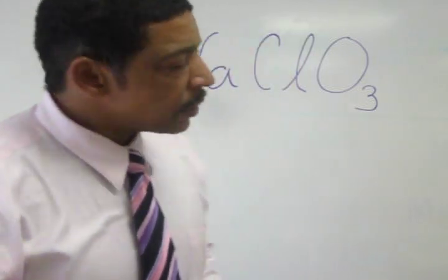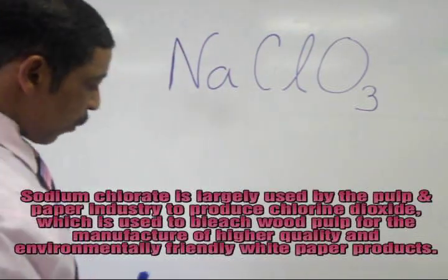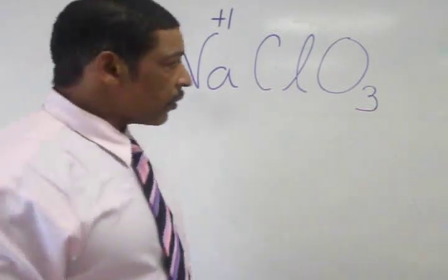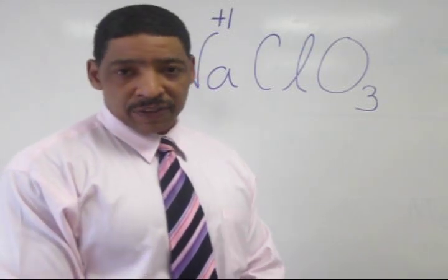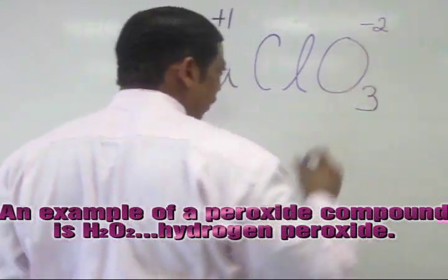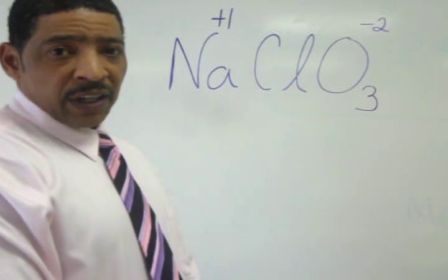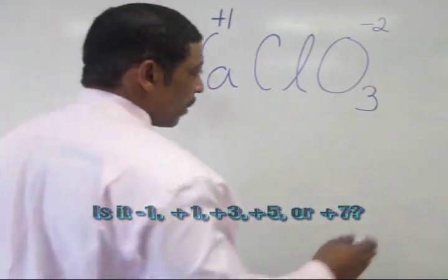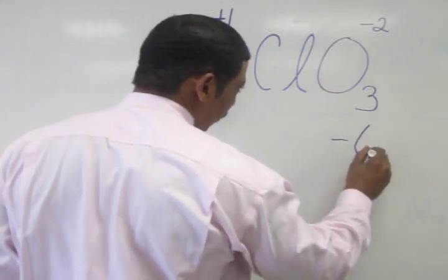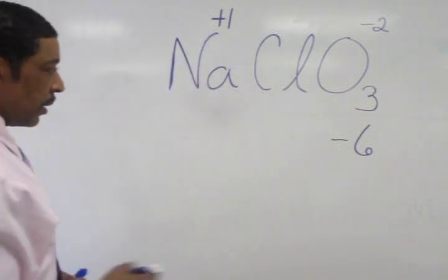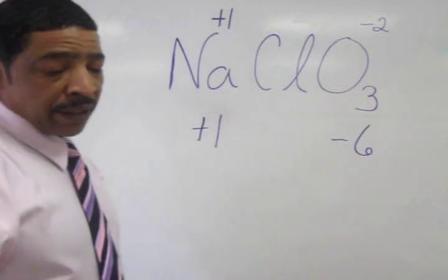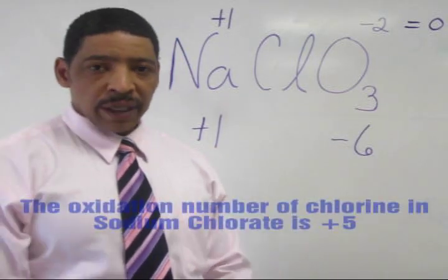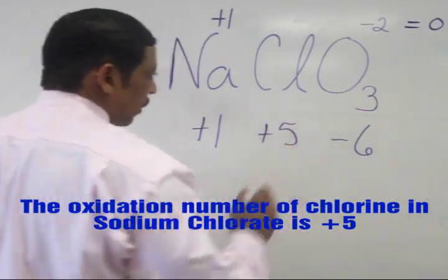Consider the compound sodium chlorate. As we said before, all group 1 ions will have a plus 1 oxidation state. Oxygen, except when in a compound known as a peroxide, will always have a minus 2 oxidation state. Simply adding up our oxidation states will now tell us which oxidation state the chlorine will have. In this case, 3 times minus 2 gives a minus 6, and 1 times plus 1 gives a plus 1. The net charge must be 0. Therefore, in this situation, chlorine will have a plus 5 oxidation state.